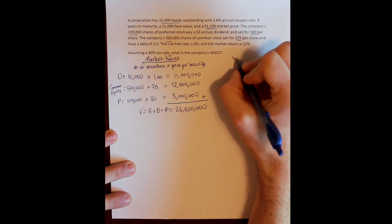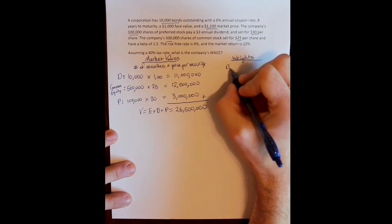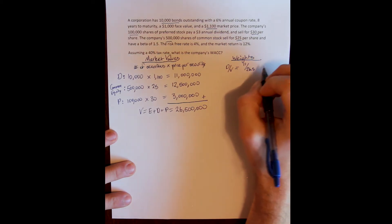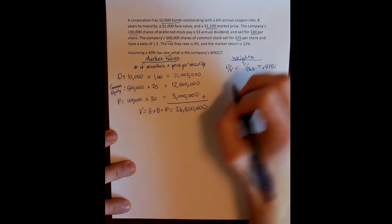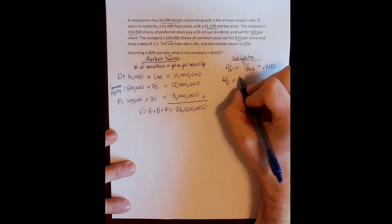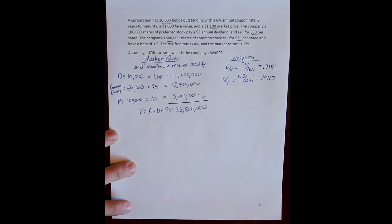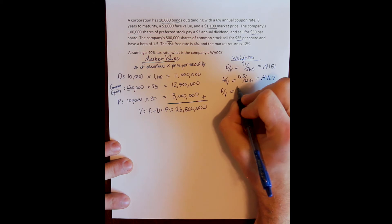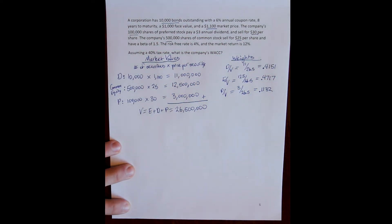Now we can calculate the capital structure weights — the relative proportions of the firm financed by each source of capital. Starting with debt: $11 million divided by $26.5 million tells us that 41.51% of the firm has been financed using debt. The market value of equity divided by the firm value is 12.5 divided by 26.5, or 47.17% financed using common equity. Finally, for preferred shares: $3 million divided by $26.5 million means 11.32% of the firm has been financed using preferred equity.